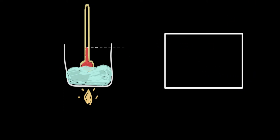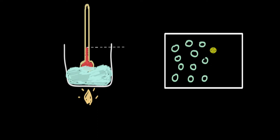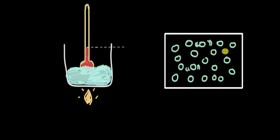At the particle level, if we zoom in — we have ice to begin with, and all of these ice particles are tightly packed because it's a solid. Initially they are vibrating about their position, but when you supply heat it increases their kinetic energy, so they start vibrating faster. As you keep supplying heat energy, there comes a stage when these particles are able to break the forces of attraction between them.